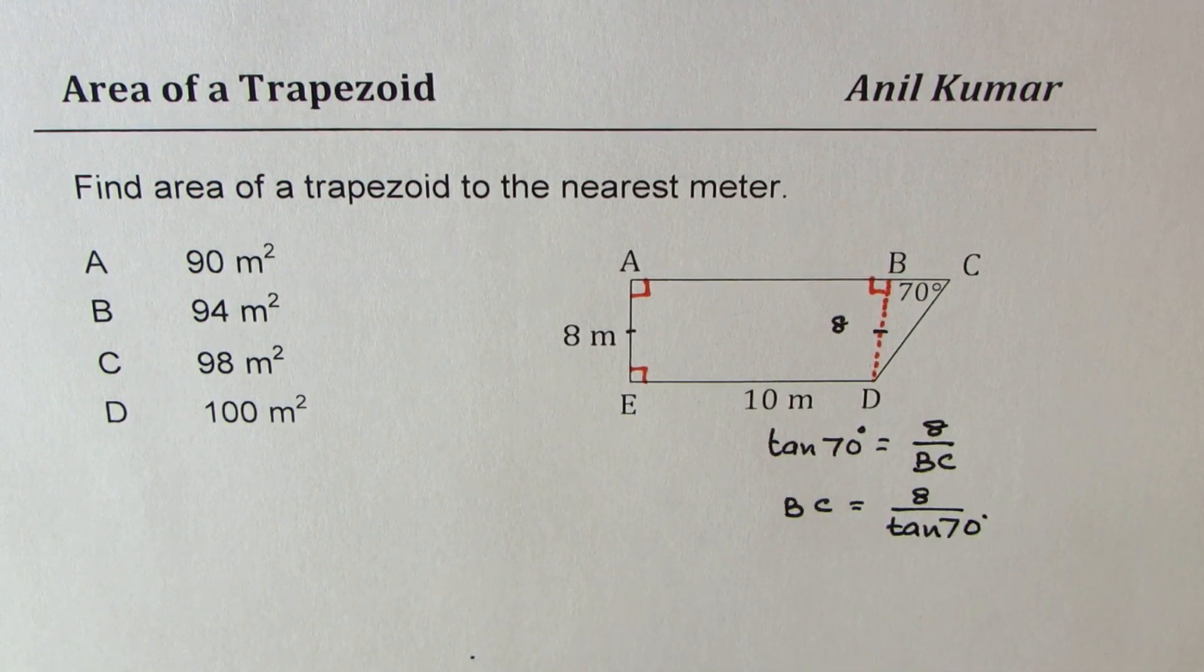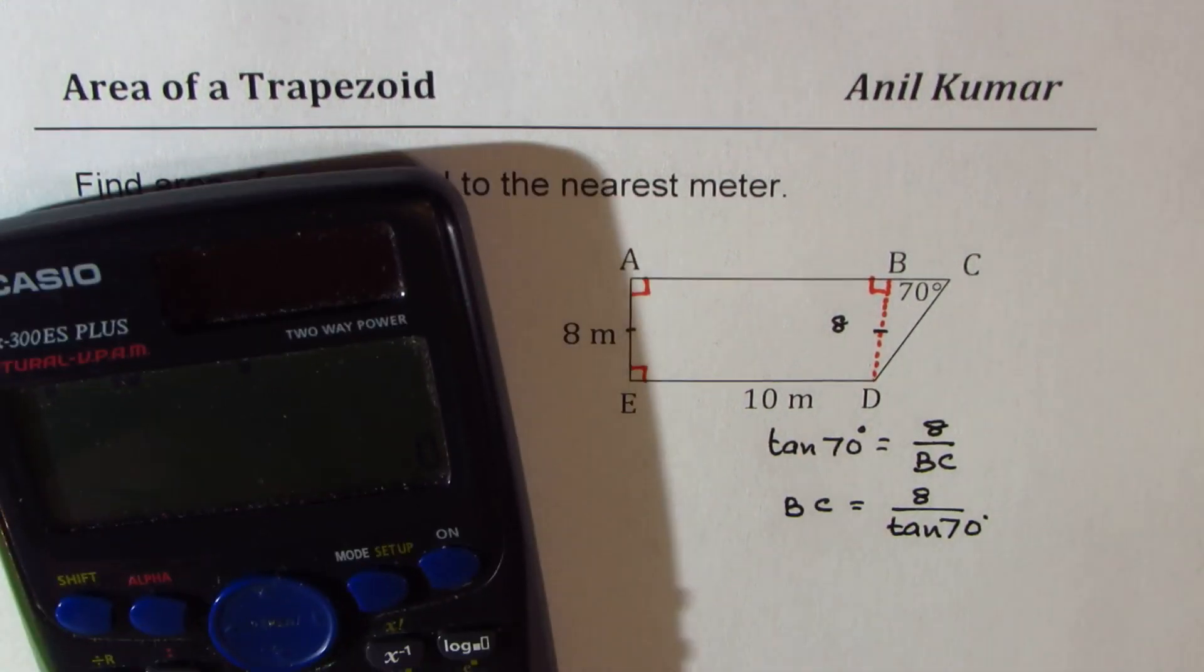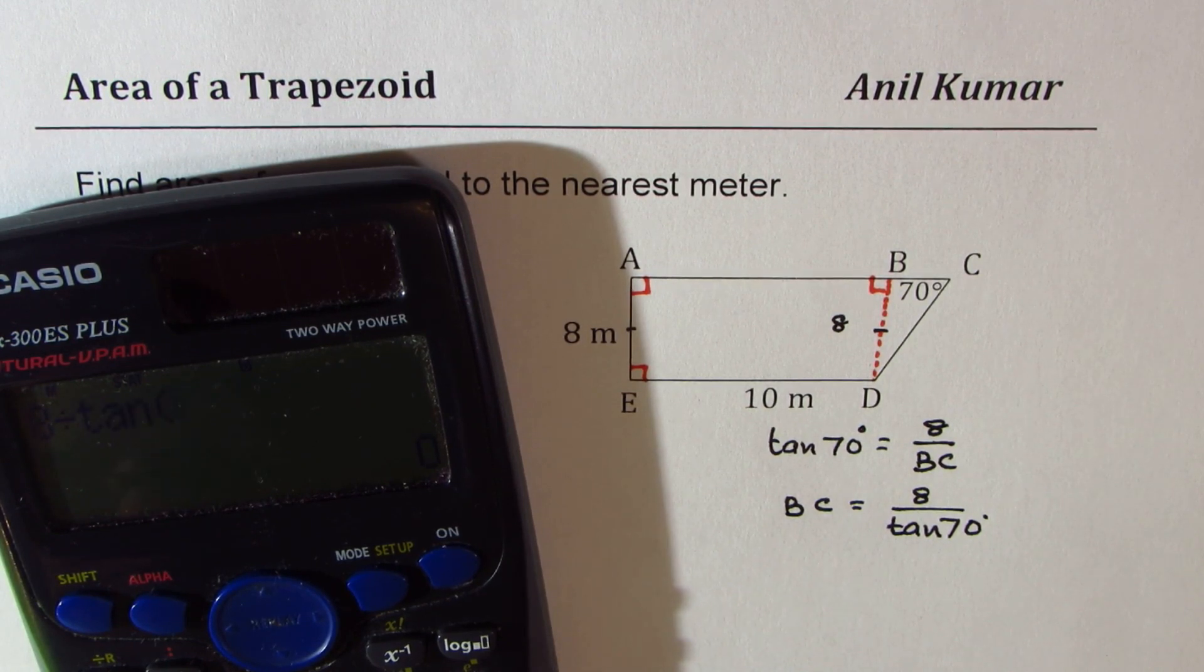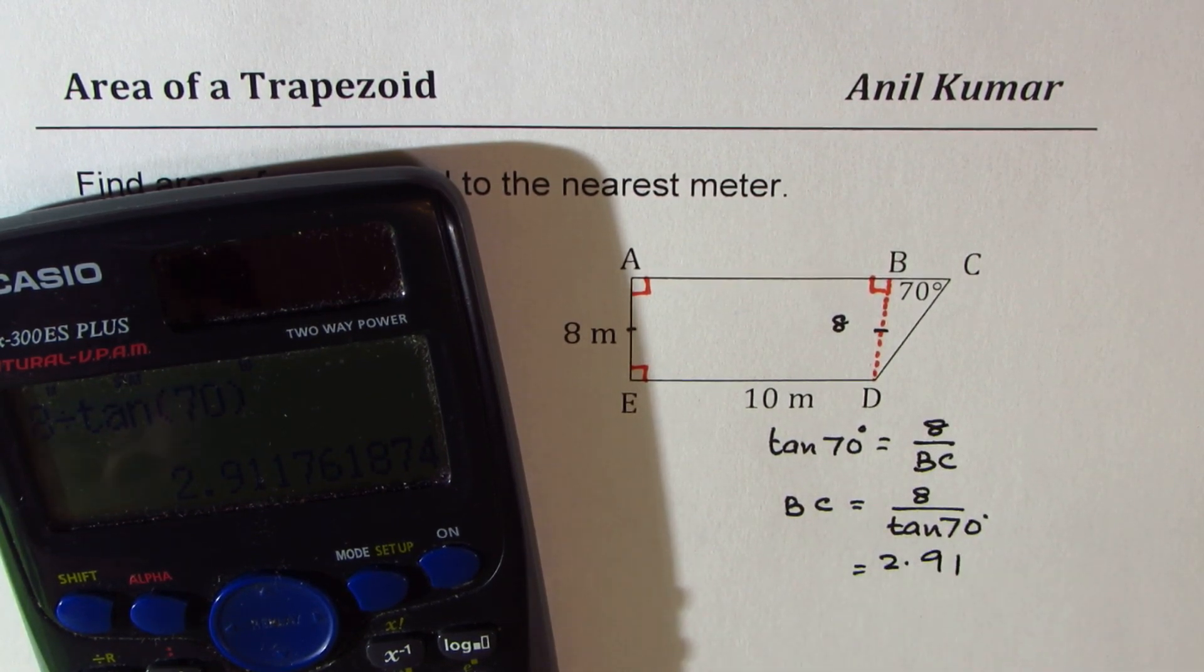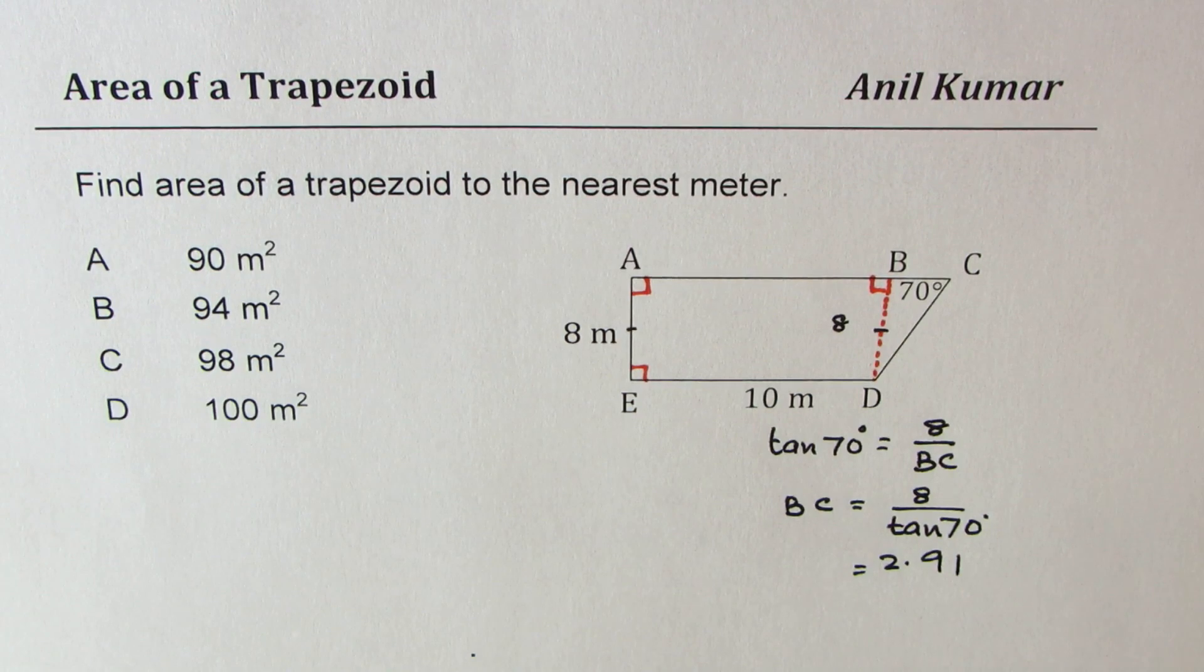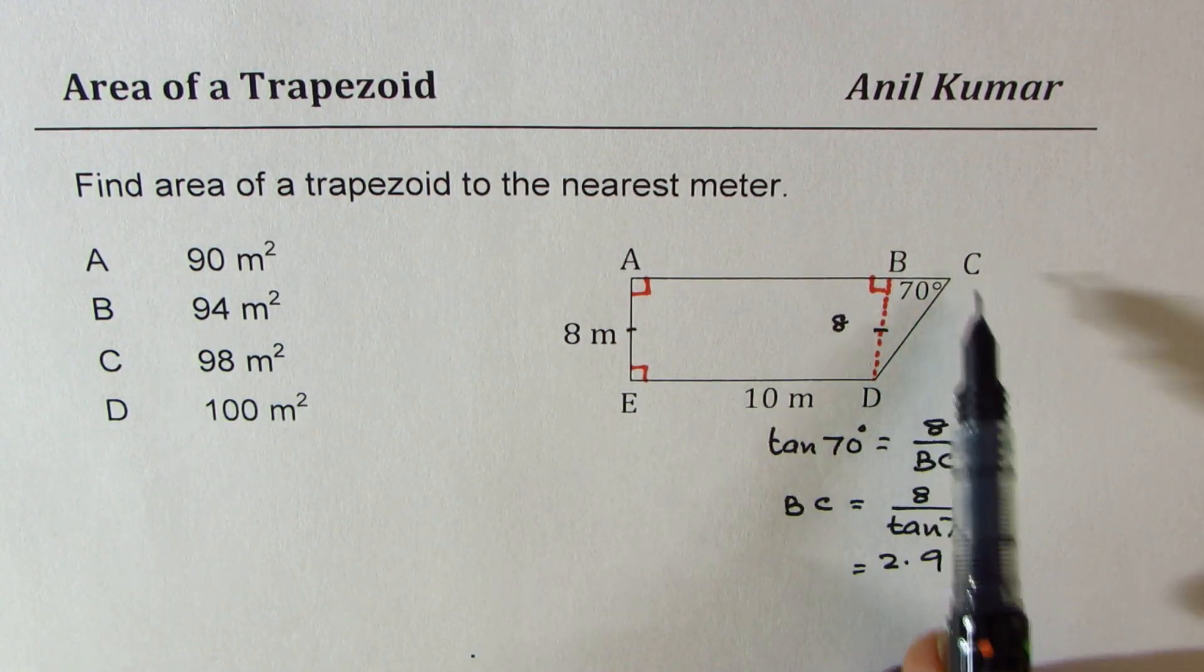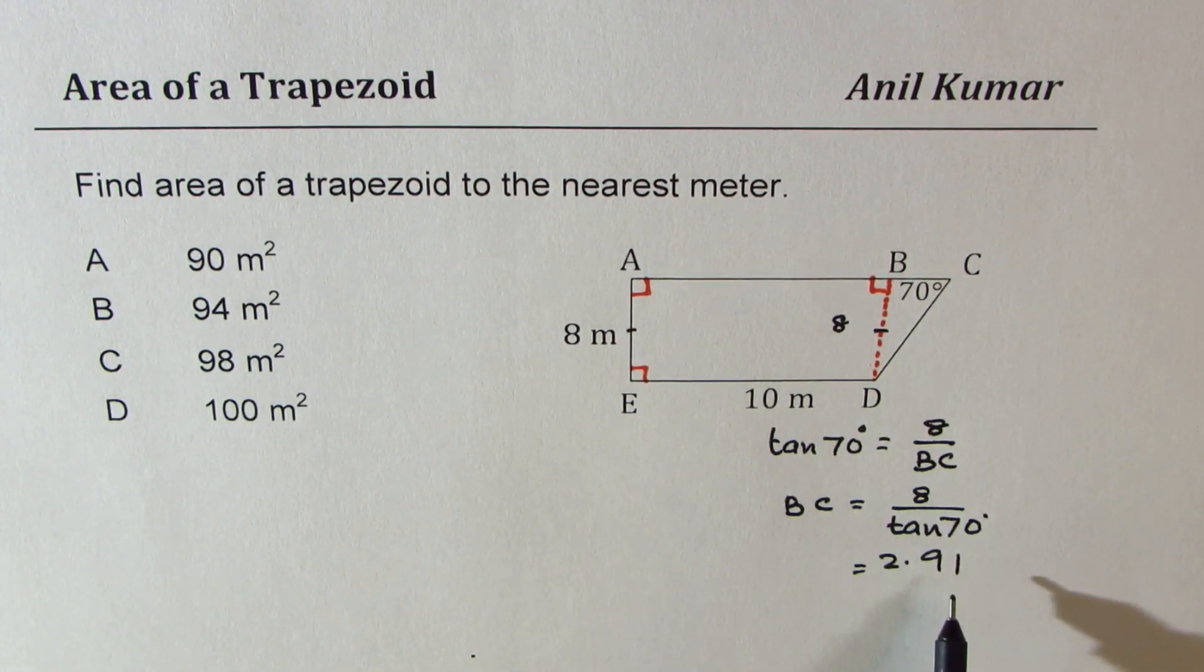So let's calculate this side. 8 divided by tan of 70 degrees. That gives us 2.91, let's say. So BC is 2.91.